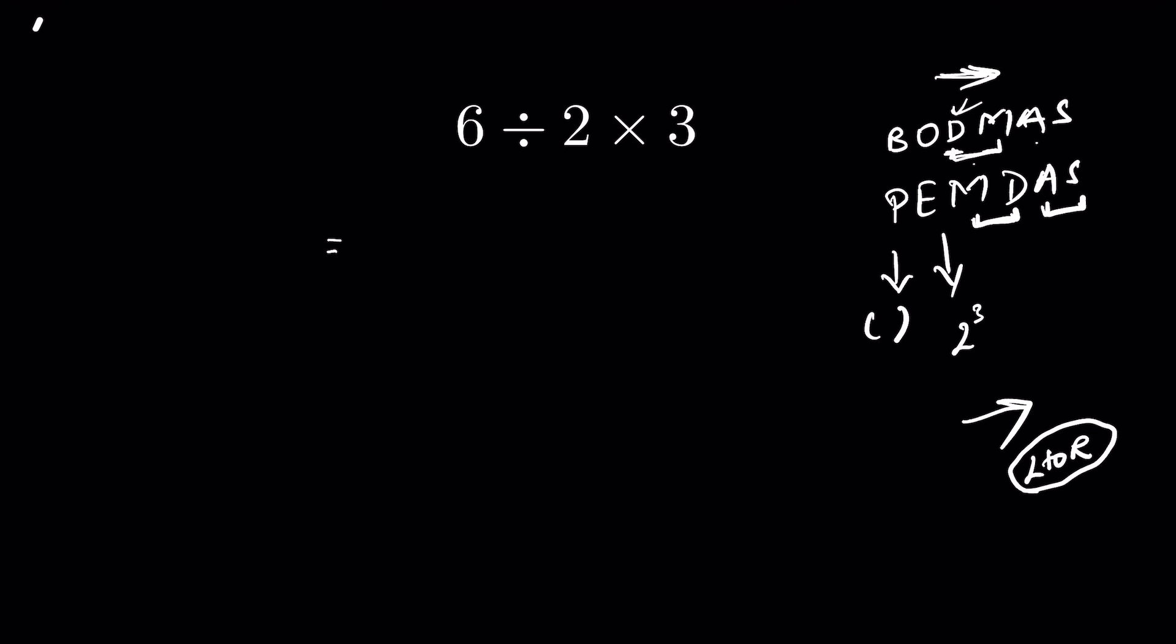Now in this question, 6 divided by 2, going from left to right, we have division first. So 6 divided by 2 is 3, and then times 3, the answer is 9.